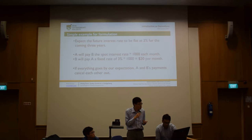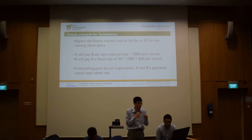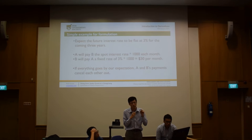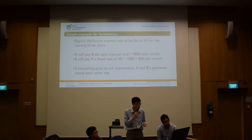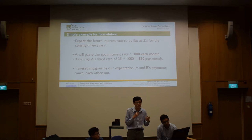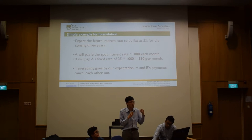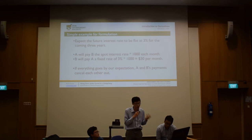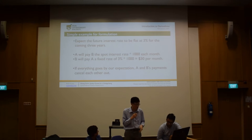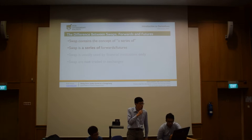For a simple example: suppose we expect the floating interest rate to be constant at 3% for the coming three years. As specified in the contract, Party A pays Party B the floating interest rate times $1,000 each month, and Party B pays Party A a fixed rate of 3% times $1,000, which is $30 per month. If everything goes as expected, these payments will be exactly equal. But if the market fluctuates and the interest rate varies, the contract will become more beneficial to either A or B. The first difference between swap and futures is that a swap can be considered a series of futures.